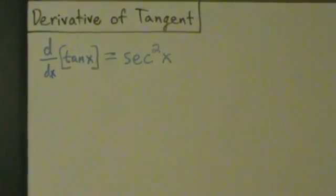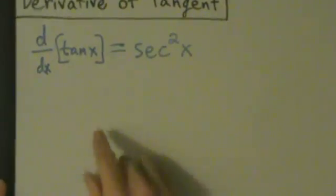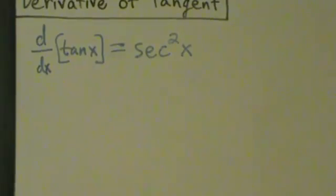So d/dx of tan(x), let's zoom in on that now: d/dx of tan(x) = sec²(x). That's kind of interesting, a little bit strange.